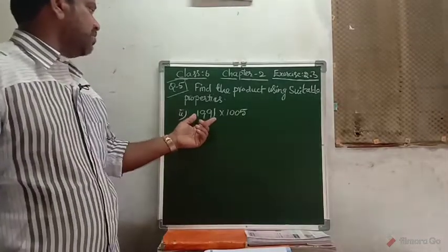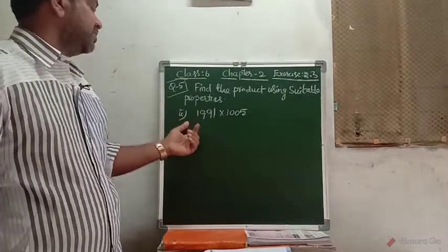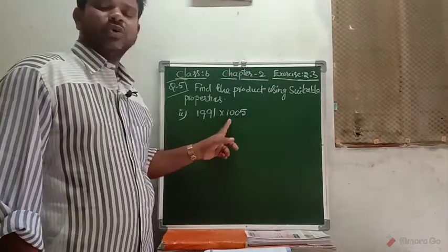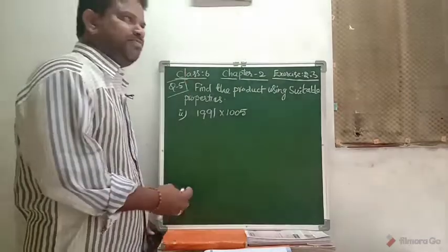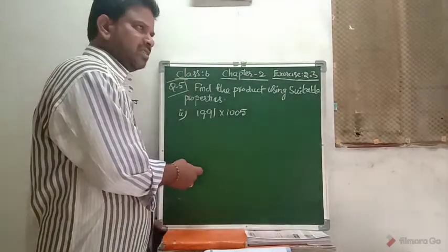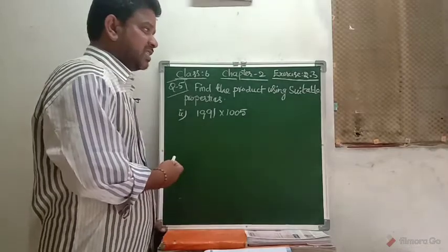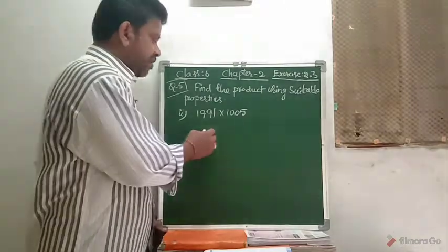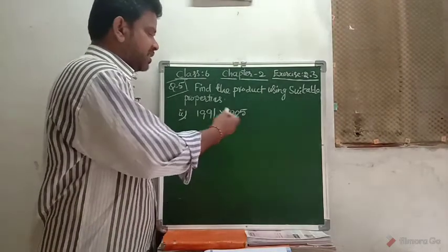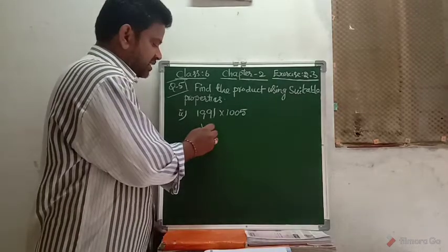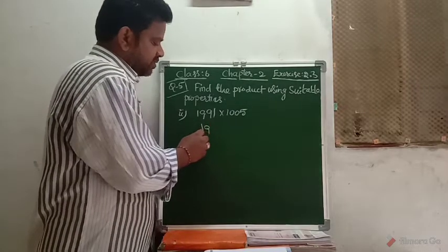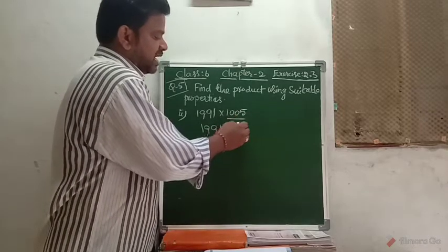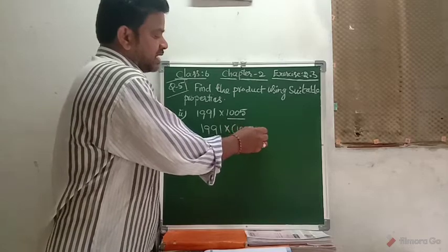After completing question number 1 of question number 5, we consider question number 2: 1991 into 1005. Instead of general multiplication, we use the distributive property. 1005 can be written as 1000 plus 5, so 1991 into 1005 becomes A into B plus C.